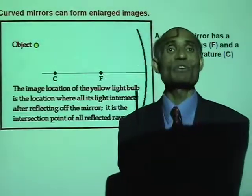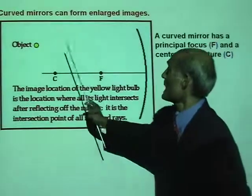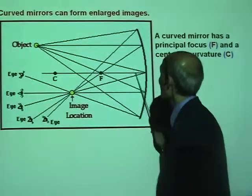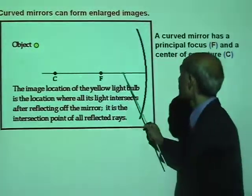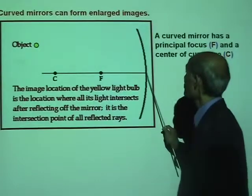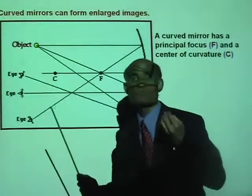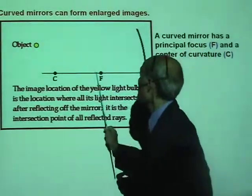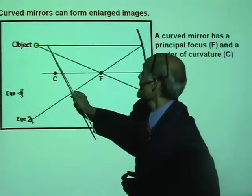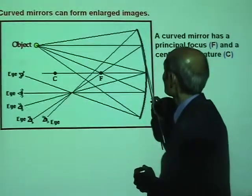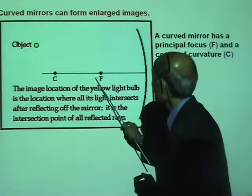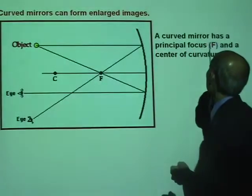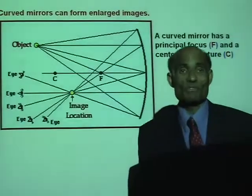What is the principal focus of a curved mirror? If this is the object, a light ray that is parallel to the axis of the mirror — this line going to the center is called the principal axis. A curved mirror has a principal axis. If you now take a ray that is parallel to that principal axis, after reflection it will go through a point on the principal axis, and that is called the principal focus of the mirror.